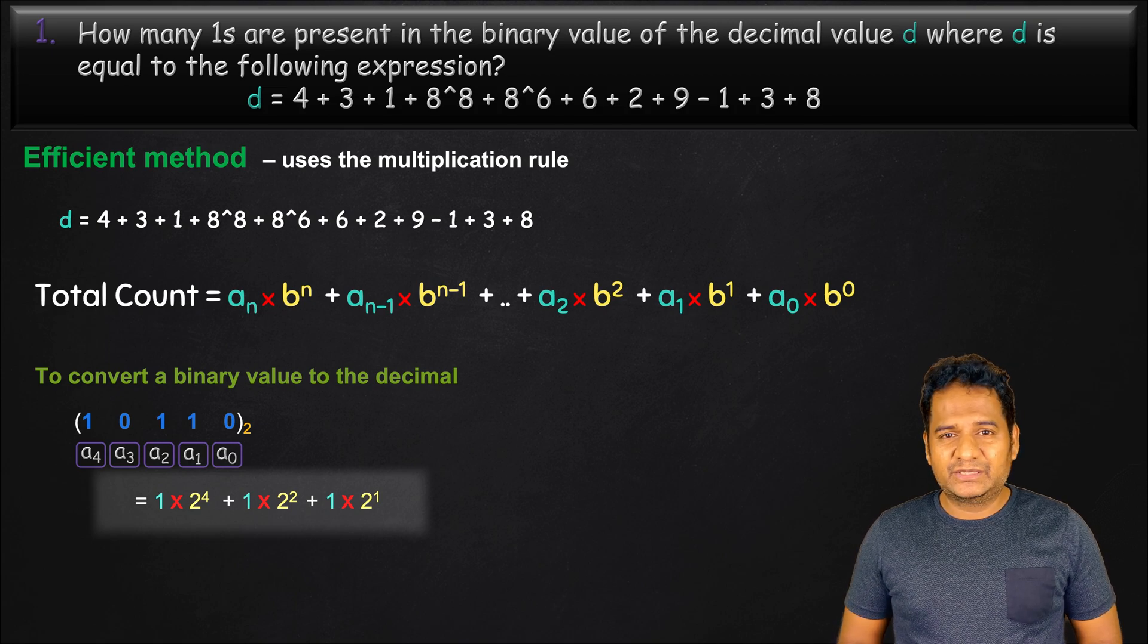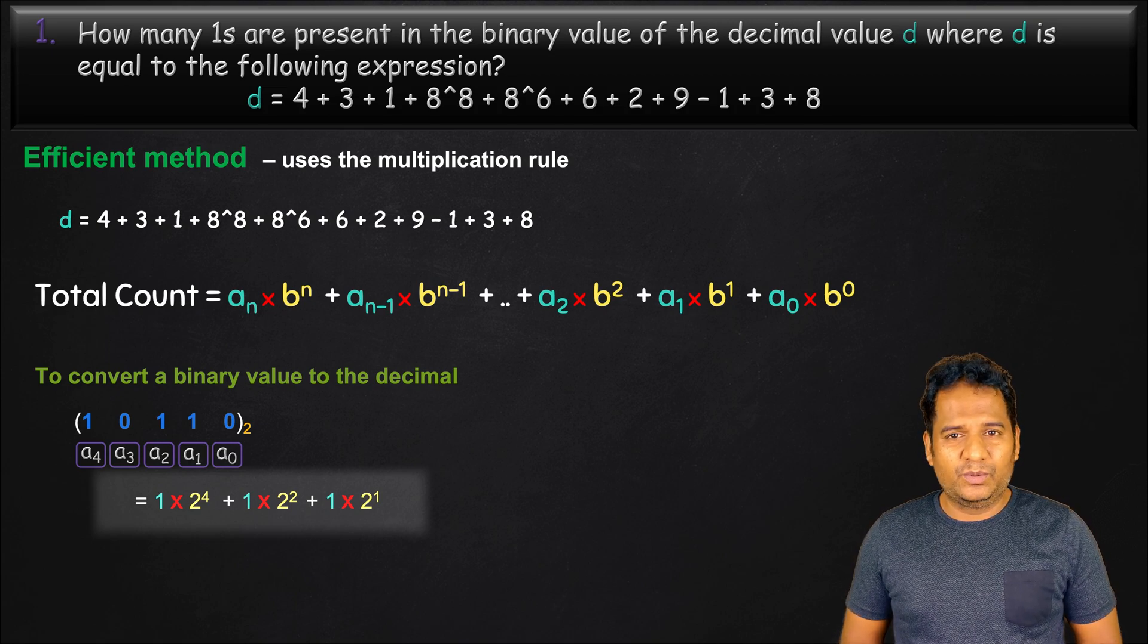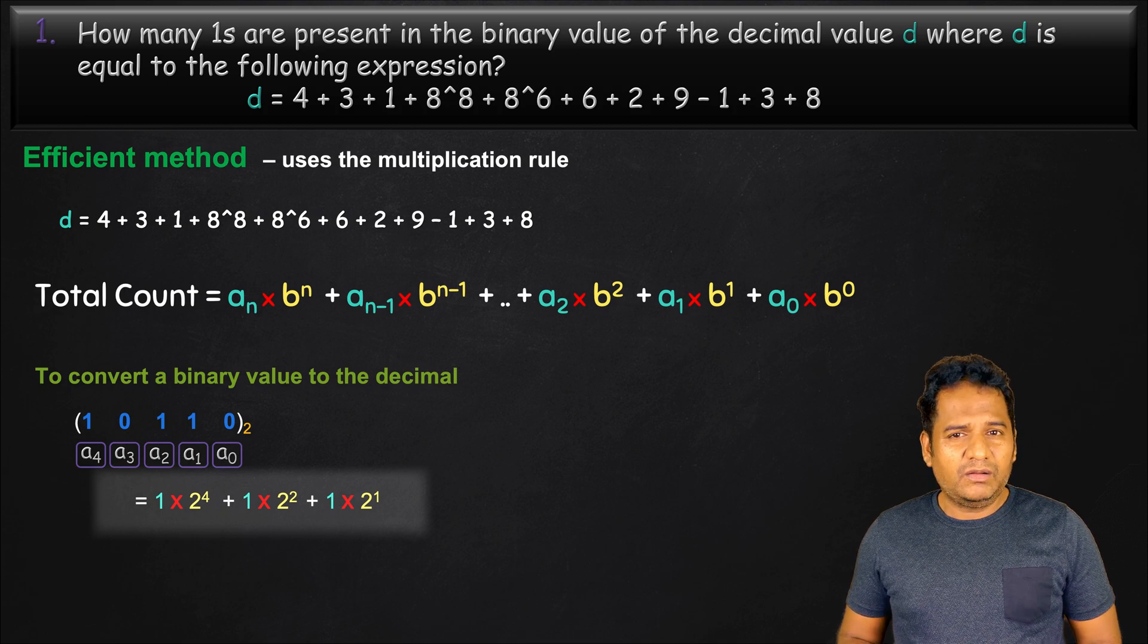Further, the value of x would not repeat. That is, 2 power 4, 2 power 2, and 2 power 1 are all with unique powers.